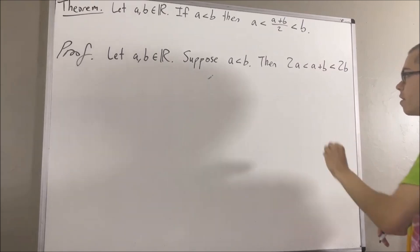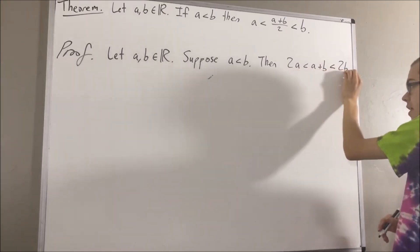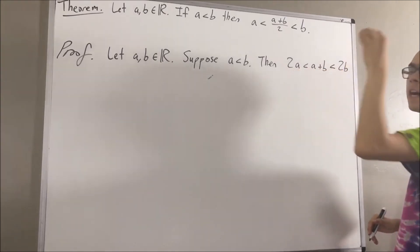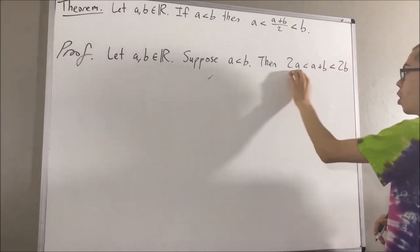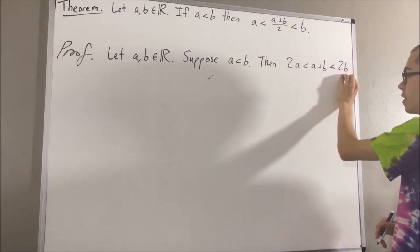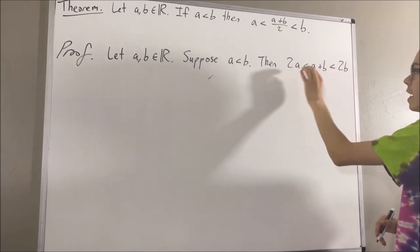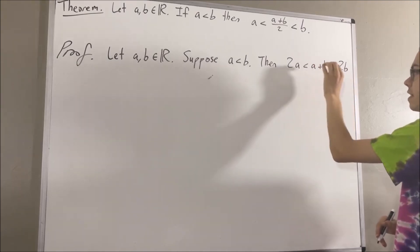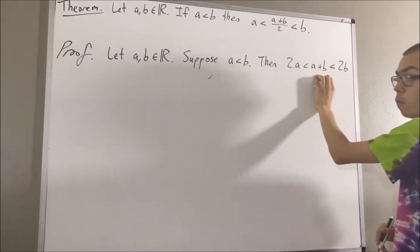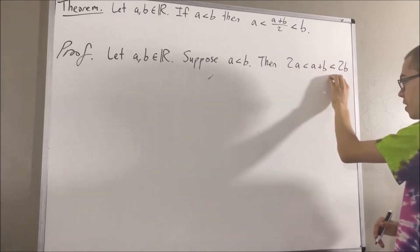And then we can take this inequality and divide by 2 on all three sides. And we get that a is less than a plus b over 2, which is less than b.